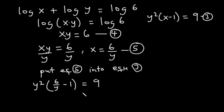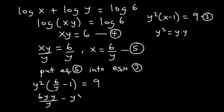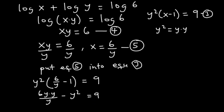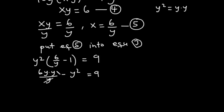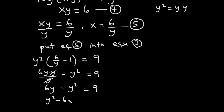We multiply y squared through. Since y squared equals y times y, we get 6y times y divided by y, minus y squared equals 9. The y cancels, giving 6y minus y squared equals 9. Transposing, because we have negative y squared it becomes positive y squared, and positive 6y becomes negative 6y, maintaining the 9, giving y squared minus 6y plus 9 equals 0.